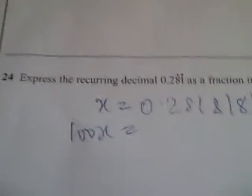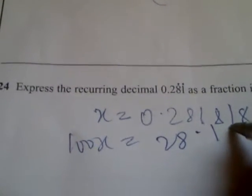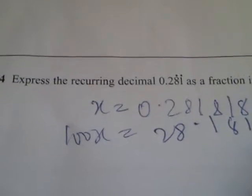multiplying both sides by 100, we'll have 28.181 recurring. Okay,